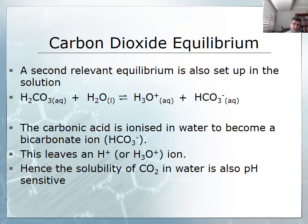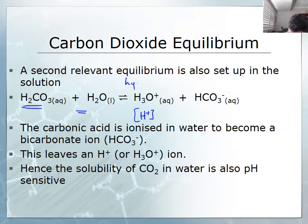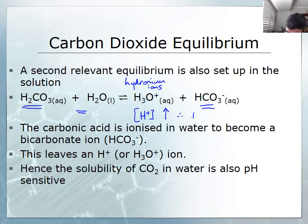In addition to our understanding of the acidic nature of carbon dioxide, we also know that one of the products of CO2 dissolving in water is carbonic acid, and this too will react with water to produce hydrogen ions — in the form of what we call hydronium ions. Hydronium ions are water molecules with a hydrogen ion attached to them, along with bicarbonate or hydrogen carbonate ions. This increases the hydrogen ion concentration and therefore decreases the pH of the solution, so the carbonic acid ionizes in water to produce bicarbonate ions and increase the concentration of hydrogen ions.